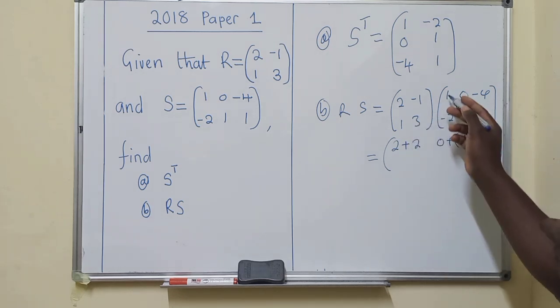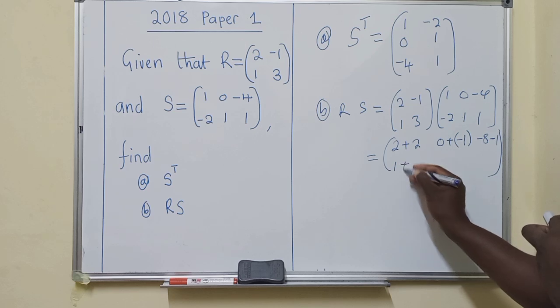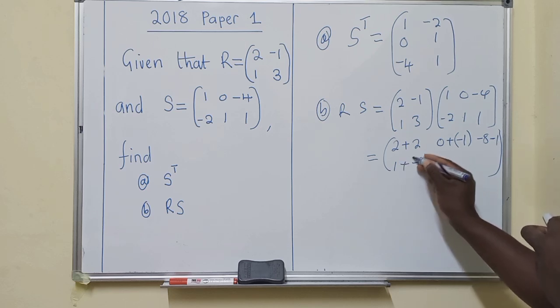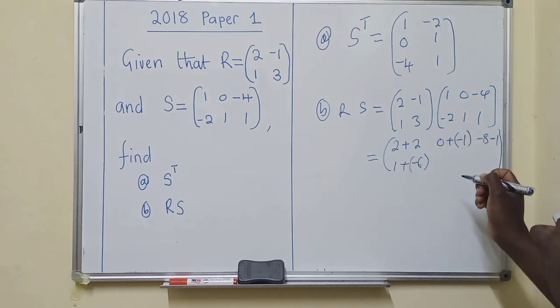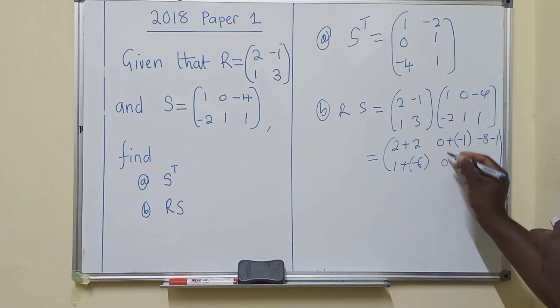The next will be this by this, it's 1, plus negative 6, because 3 by negative 2 is negative 6. This by this is 0.